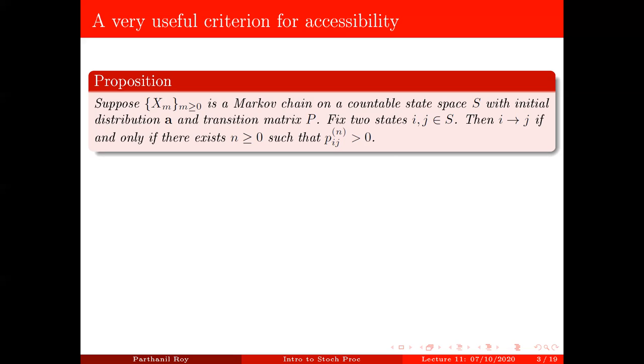So the advantage of this proposition is that it completely characterizes accessibility using the transition matrix. It doesn't have anything to do with the first hitting time tau j. And that's much easier to check when you see examples.